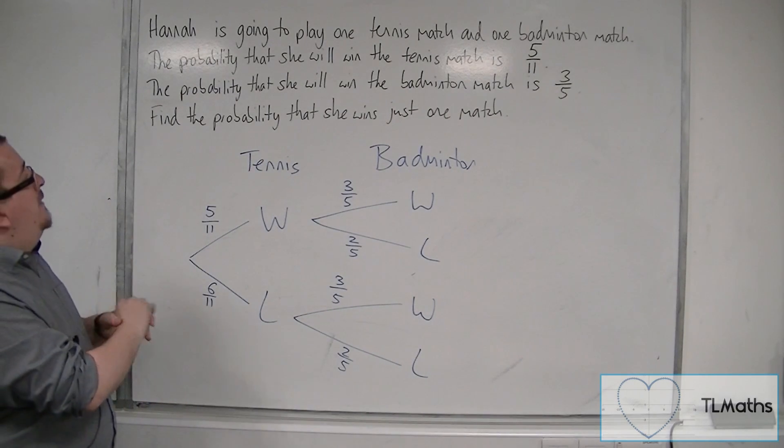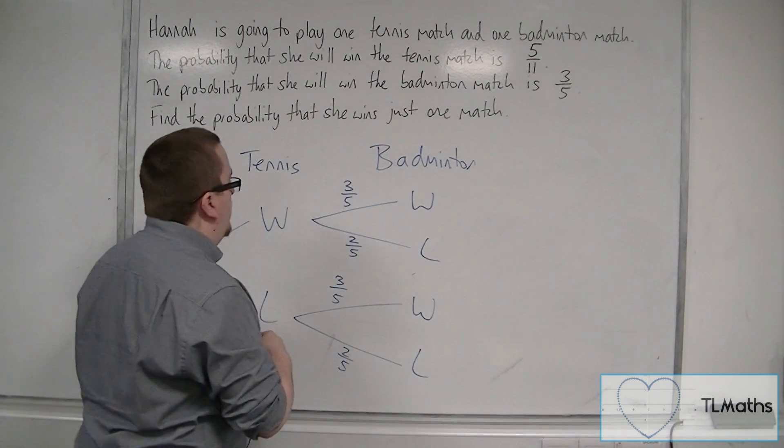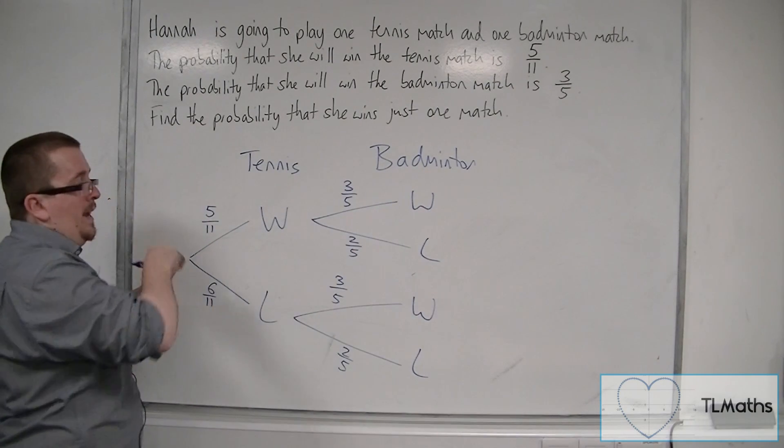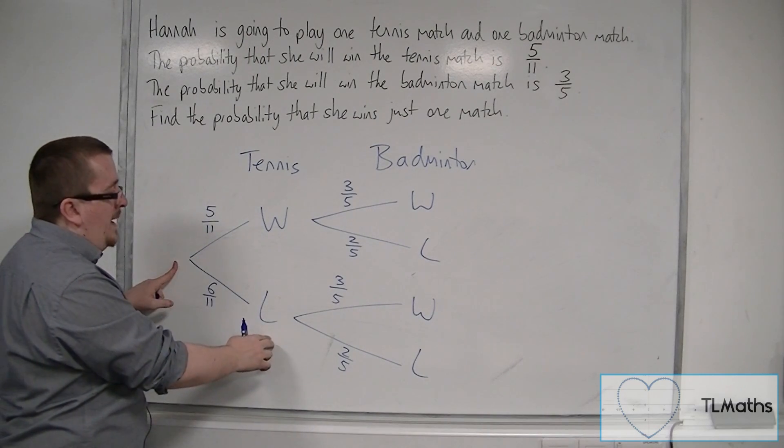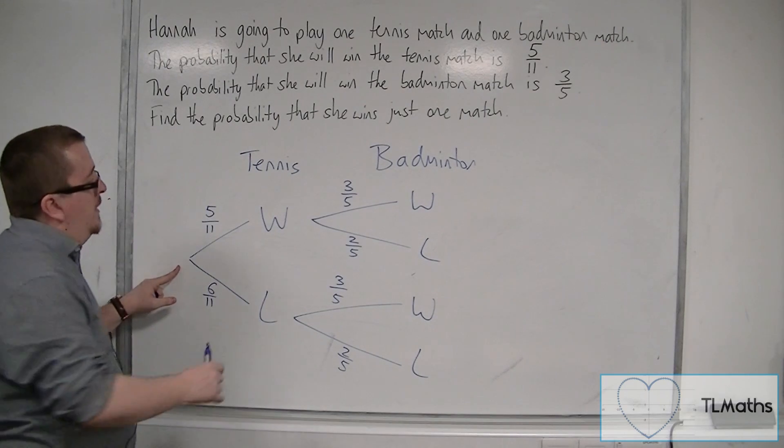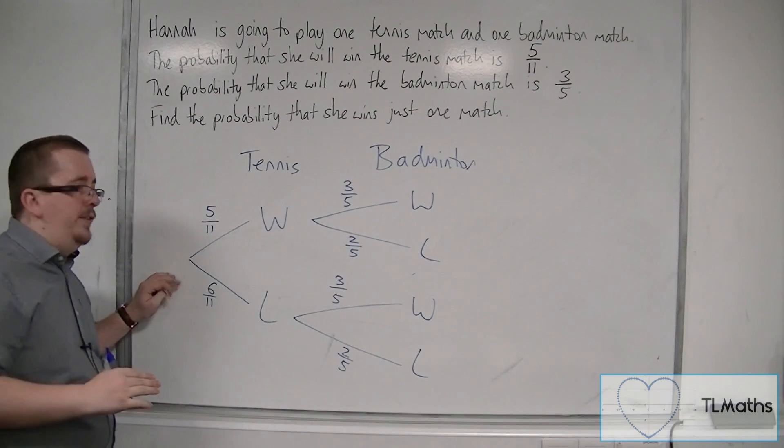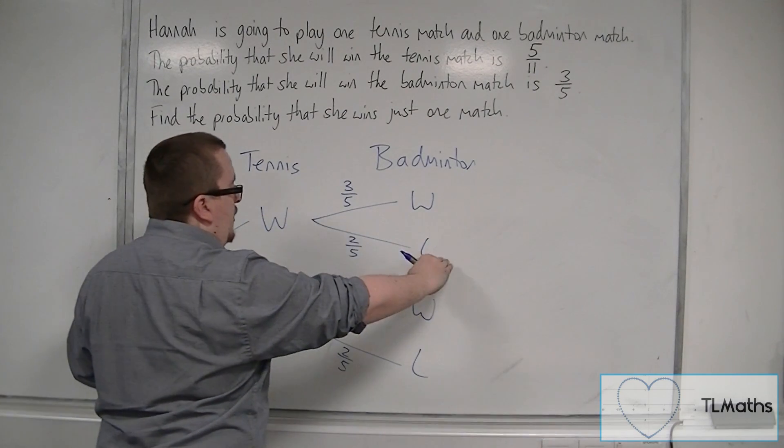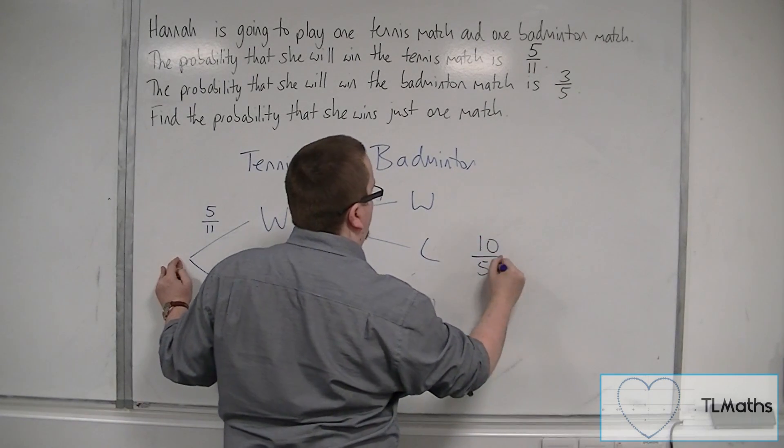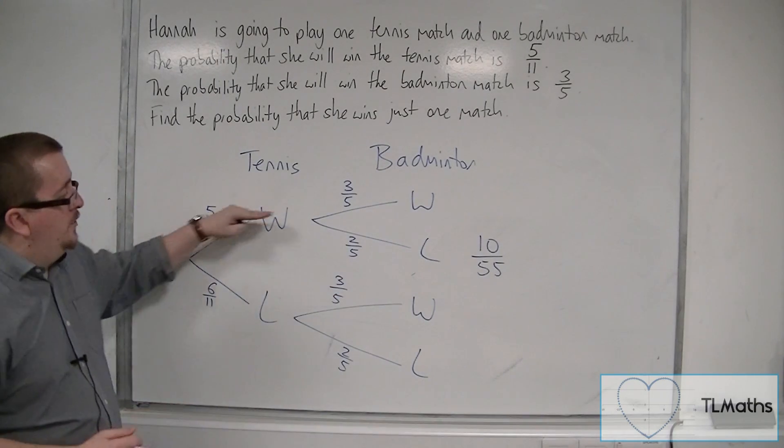We want to find the probability that she wins just one match. She can either win the tennis match and then lose the badminton match, or she can lose the tennis match and win the badminton. In order to work out those probabilities, we multiply along the branches. We have 5 elevenths times 2 fifths, and that will get us 10 over 55. You multiply along the branches.